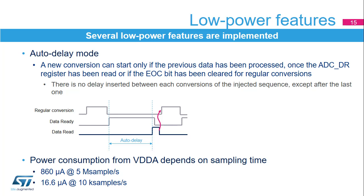When auto-delay mode is active, the ADCs wait until the last conversion data is read or the end of conversion flag is cleared before starting the next conversion. This is a way to automatically adapt the speed of the ADC to the speed of the system which will read the data. This also avoids unnecessary conversions and thus reduces power consumption. This auto-delay mode does not apply to injected conversions, except the last one when switching back to the regular conversions.